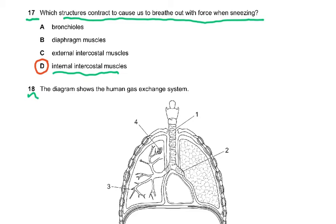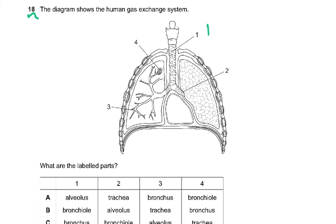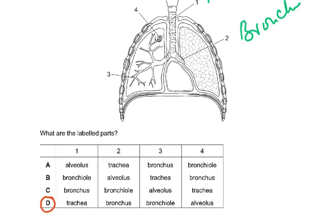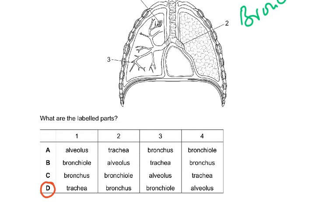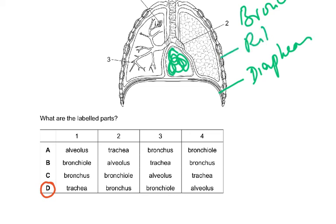Question 18: the diagram shows the human respiratory exchange system. Label 1 is the trachea, 2 is the bronchus, 4 is the alveoli, and 5 is the bronchiole. The diagram also shows the heart, two lungs, the diaphragm, the ribs, the external intercostal muscles, and the internal intercostal muscles.